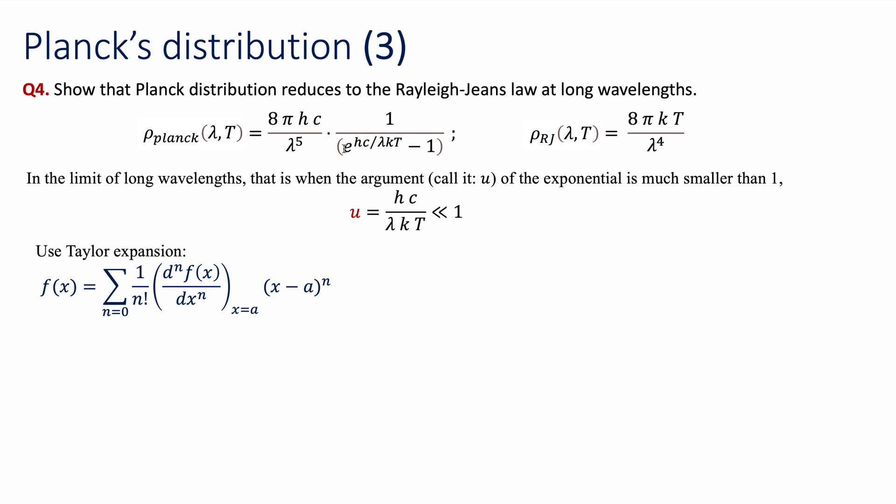Now, remember that in Taylor expansions, we have to take n derivatives of the function, evaluate it at a particular point, and we're doing this expansion around a certain value. We're going to be using the Maclaurin series that takes this a equals to 0.